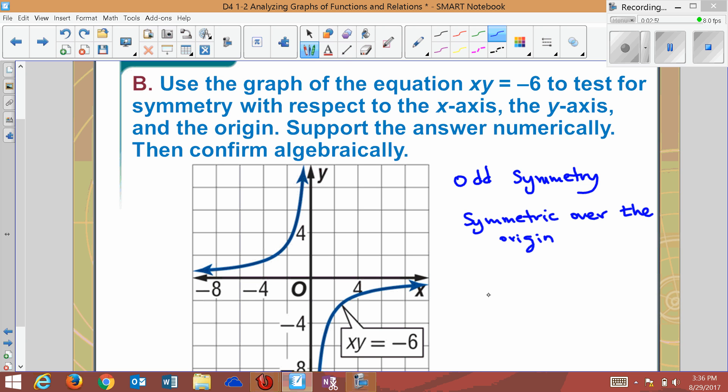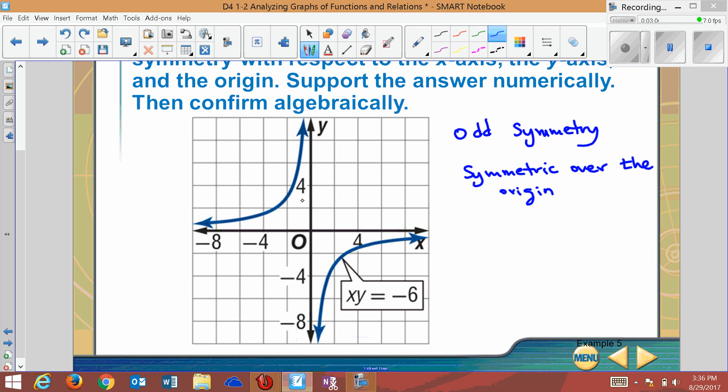And the way you would prove it is you would take any point and just reflect it across and see that both values, the x's and the y's, switch sides. Now, we don't have any good point, so I would just have to choose any one. Let's take this one. This looks like it's up about, they're counting by two, so two, four, six. This point looks like it's up two, but it's left if we count it to be about one.